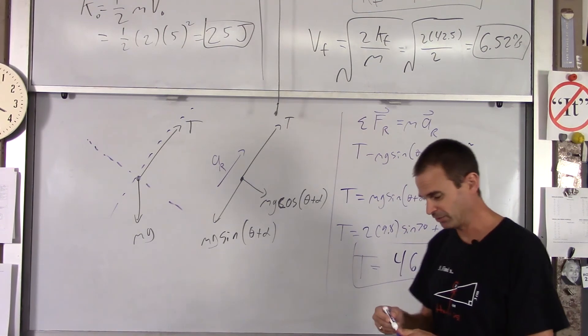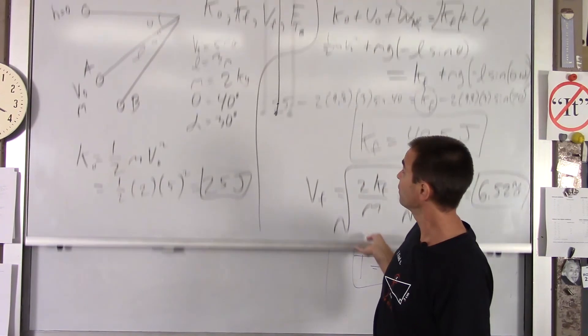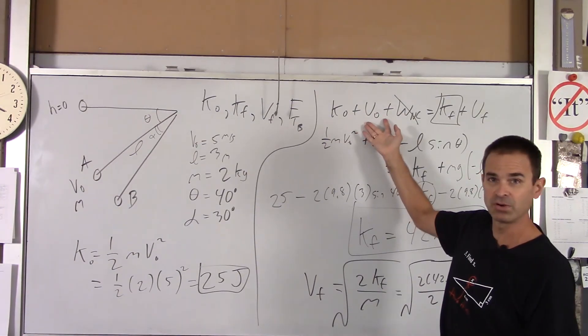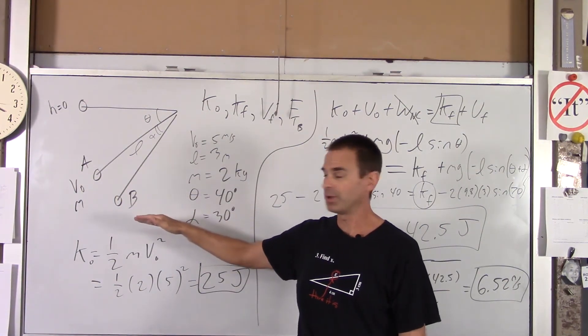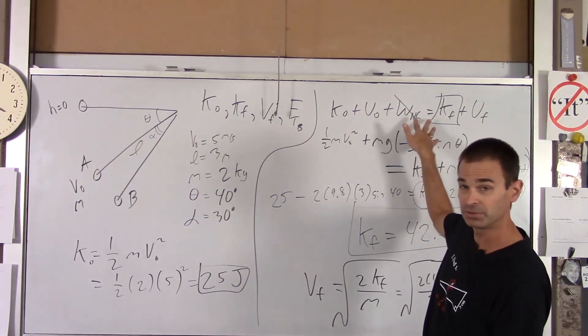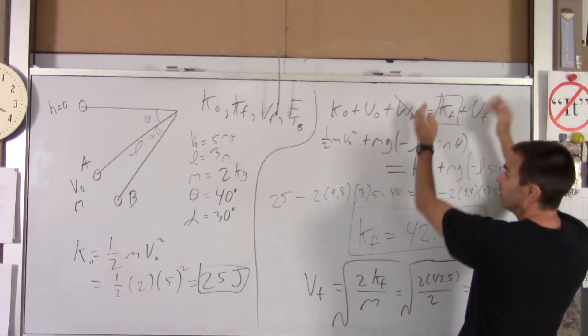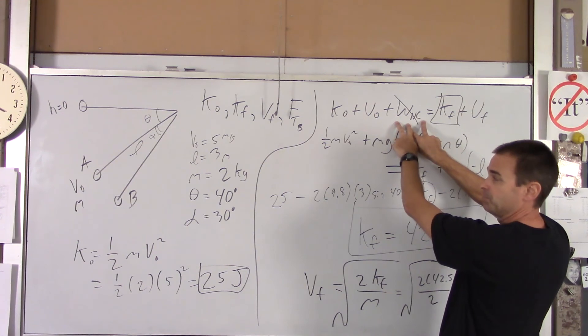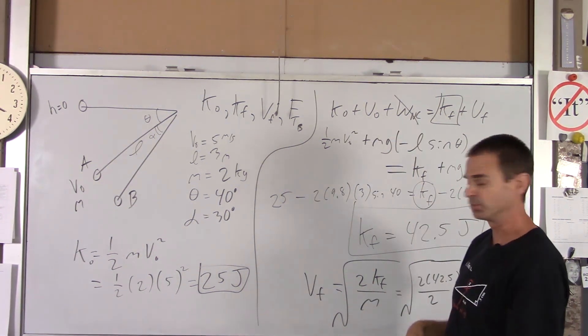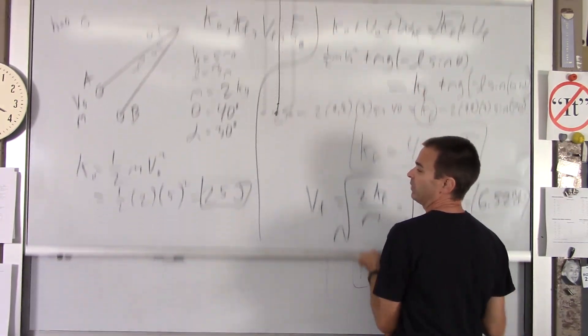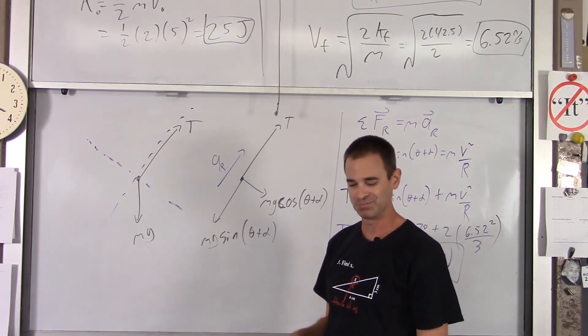All right, so there you go. So that example was using our conservation of energy equation to figure out information about an object moving from point A to point B. Whenever we use this equation, this is one location. This is the other. This is what happens in between. In this case, we didn't have any non-conservative forces acting in between. So that term was zero. And then we use that information to do a little review problem where we found the tension in the string at this point in the motion. Thank you.